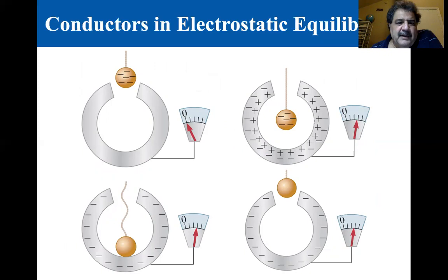You have this uncharged shell or bucket and you put a charge inside it. The electrometer is a way of measuring charge. You put the charged, negatively charged ball on a silk thread which was an insulator.